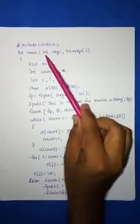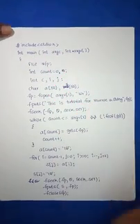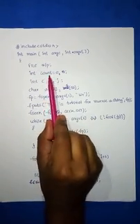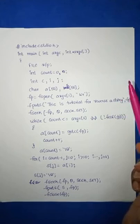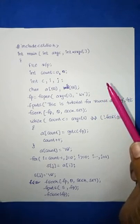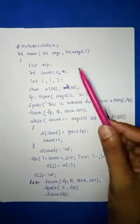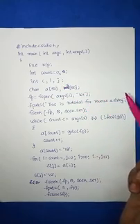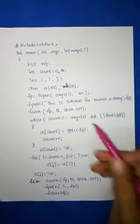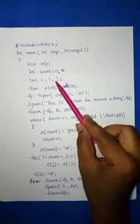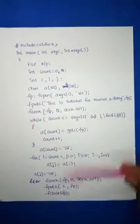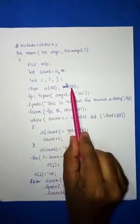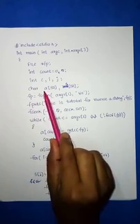The program is written using command-line arguments, so main has two parameters: argc and char* argv[]. You declare a file pointer fp, and a count variable used to check whether the correct arguments were given. You also need variables c, i, and j for reading and indexing characters. Two character arrays are declared: A[50] for copying and S[50] for the reversed string.